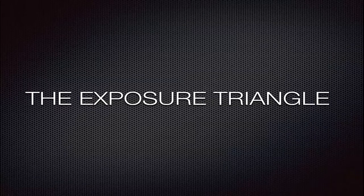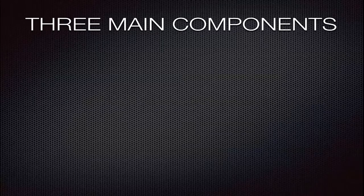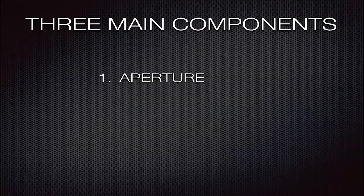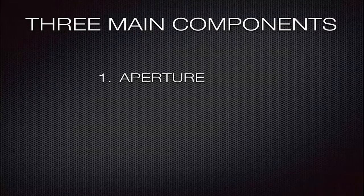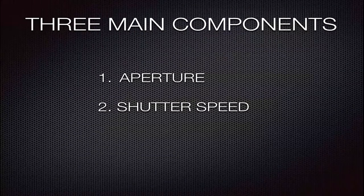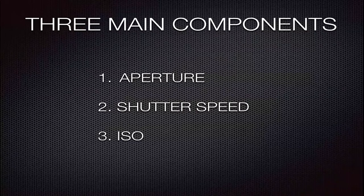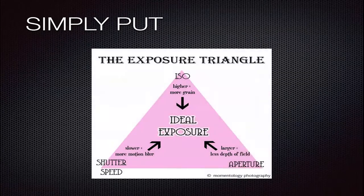It's basically the three components — and there are more components — but we'll start off with the three major components that make up an exposure. Namely, the three main components are your aperture, which is the size of the opening that your lens is providing; your shutter speed, how much time your shutter is open and allowing light to go in and hit your sensor; and finally, the sensitivity of your sensor, or the film speed if you're still shooting film. Simply put, it is the combination of those three things for an ideal exposure.